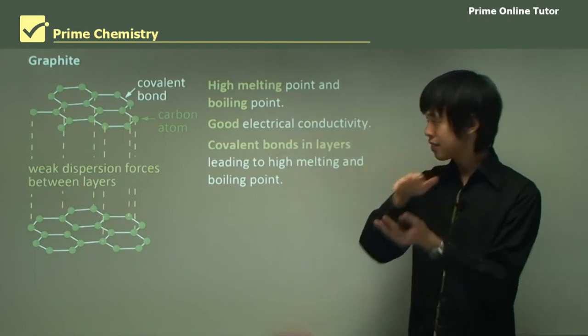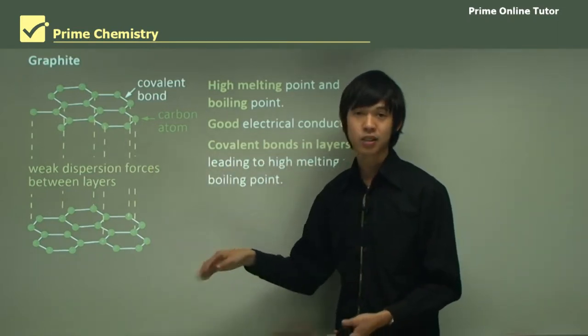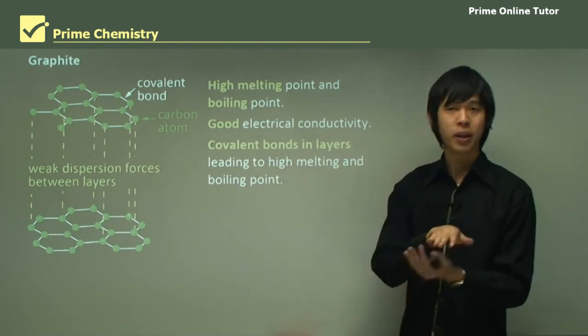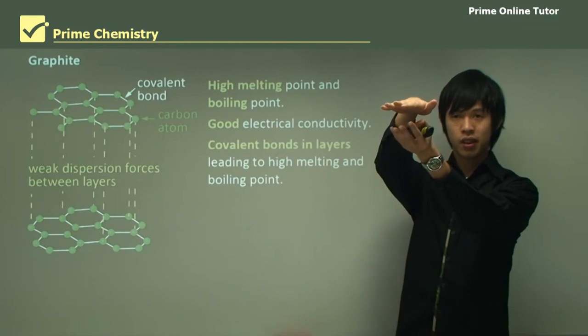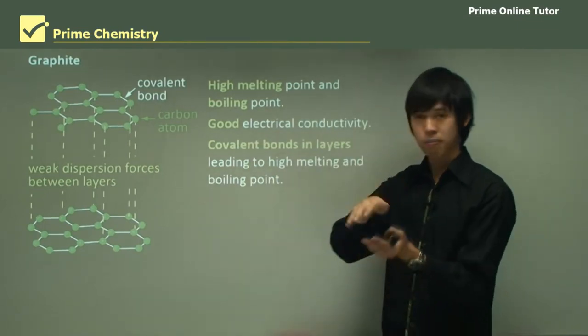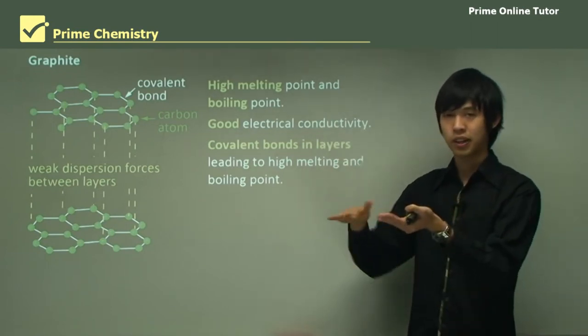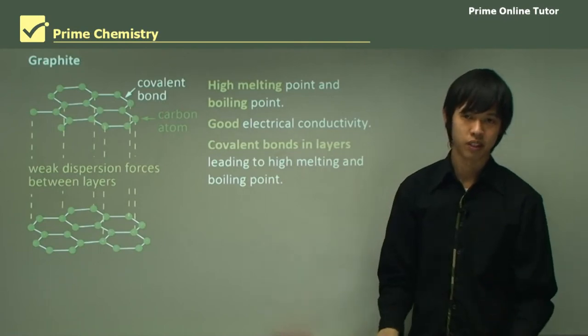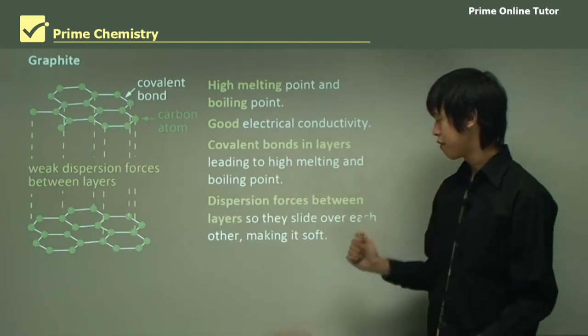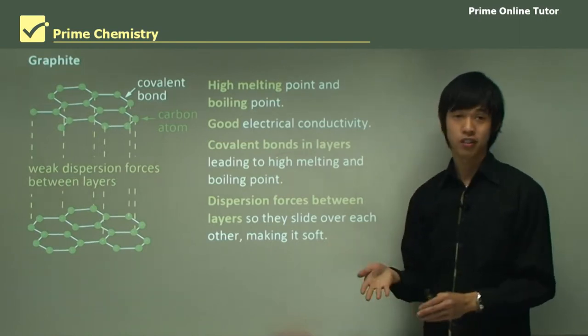Because it has planes, there are weak dispersion forces between the layers. That's what allows layers to slide past each other. And that's how a pencil works. You have a pencil, which is just stacks of these graphite molecules. As you run your pencil across the page, these layers of carbon get left behind. And that's what we do when we write. Dispersion forces between layers allow them to slide over, making it quite soft in some directions.